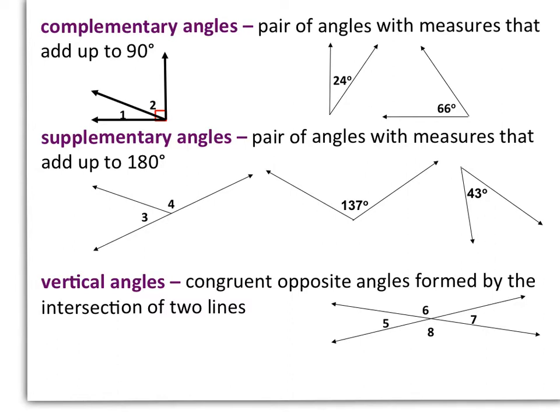And then vertical angles are congruent opposite angles formed by the intersection of two lines. So in that example, we can say that angle 6 and angle 8 are vertical, so that means angle 6 is congruent to angle 8. And I can also say that angle 5 and angle 7 are vertical, so that means angle 5 is congruent to angle 7.